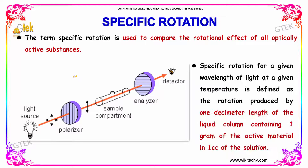Let's talk on the specific rotation. The term specific rotation is used to compare the rotational effects of all optically active substances. Specific rotation for a given wavelength of light at a given temperature is defined as the rotation produced by 1 decimeter length of the liquid column containing 1 gram of the active material in 1 cc of the solution.